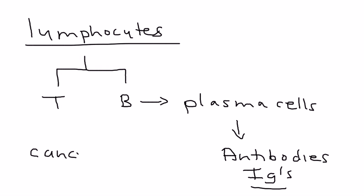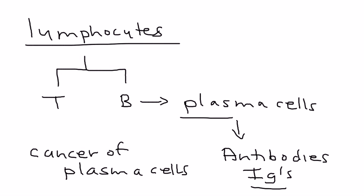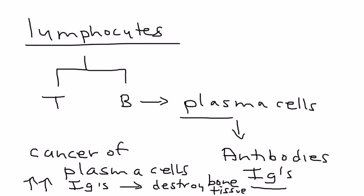Multiple myeloma is a cancer of plasma cells. When that happens, you get the production of large quantities of immunoglobulins. Those immunoglobulins go on to destroy bone tissue, and that's the main problem. The average age of someone with multiple myeloma is about 65, so we're talking about the senior population.